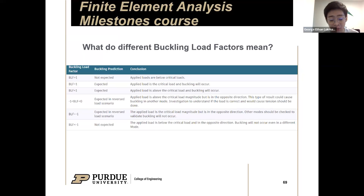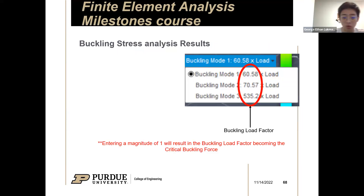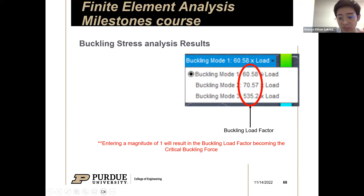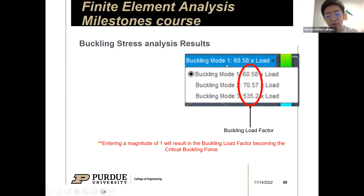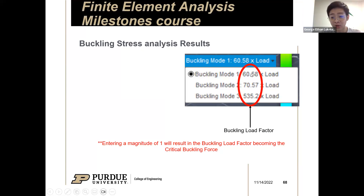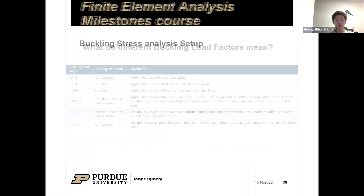We also have an explanation for what happens if your buckling load factor is a negative number. Don't worry — that doesn't mean you're doing things wrong. It just means there is another behavior that Fusion expects from the simulation. Going back, I set the magnitude of force to one, so if I see a buckling load factor of 60.58 for mode one, I can now change my applied force to 60.58 pounds.